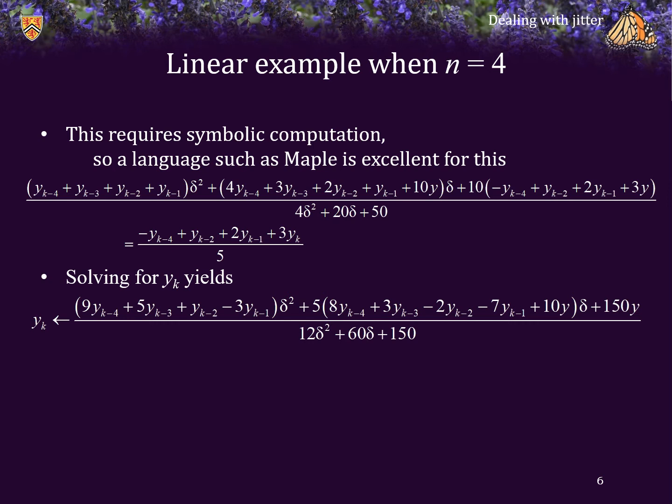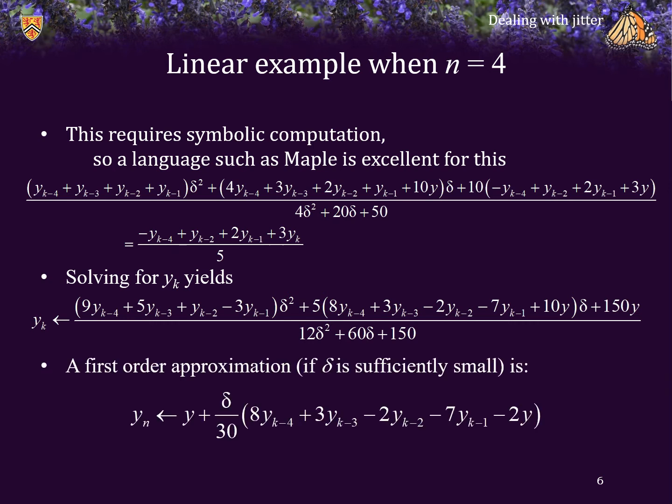Not only that, in Maple, you can also do a series expansion around delta. So you can find a first order approximation, which means you can use this if delta is sufficiently small, in which case you get this even easier formula. So for example, if delta is guaranteed to be less than 0.1, then delta squared is less than 0.01.